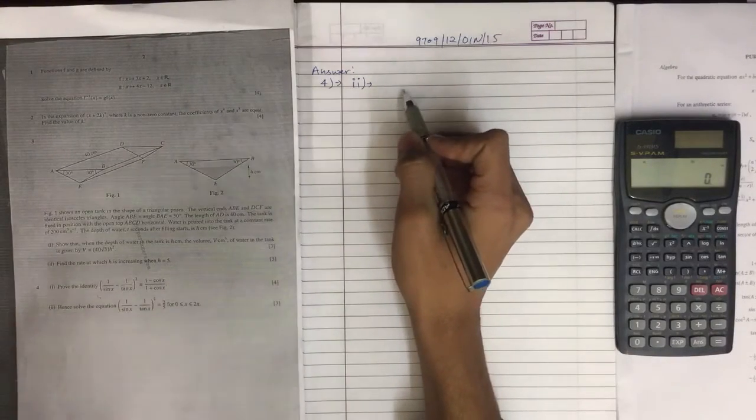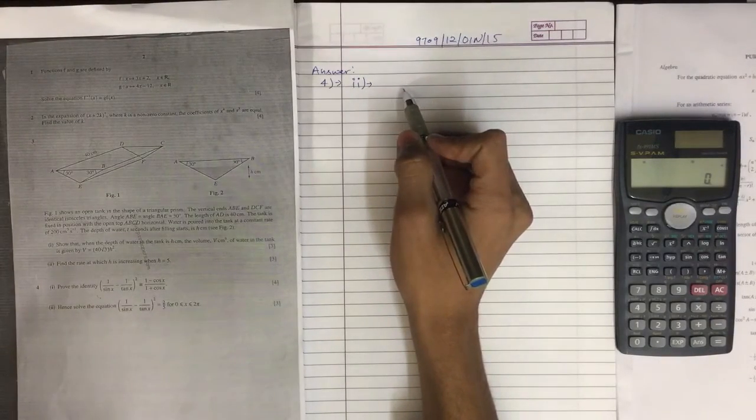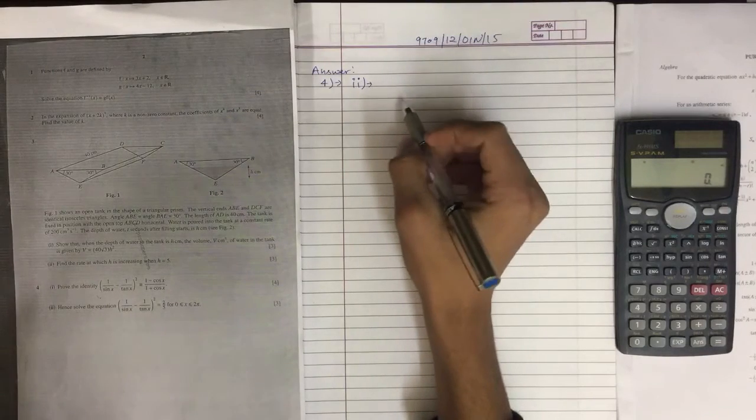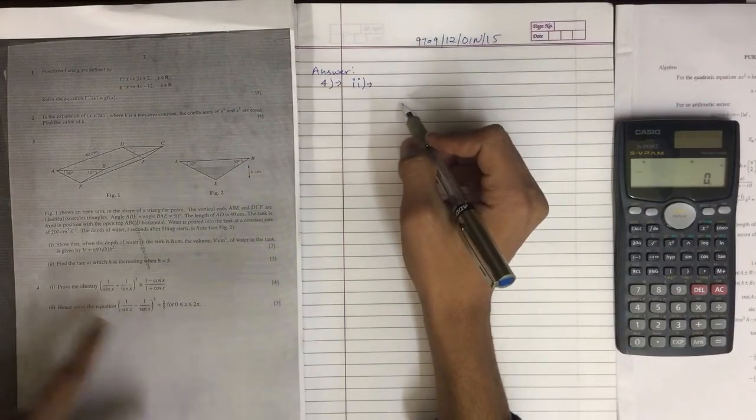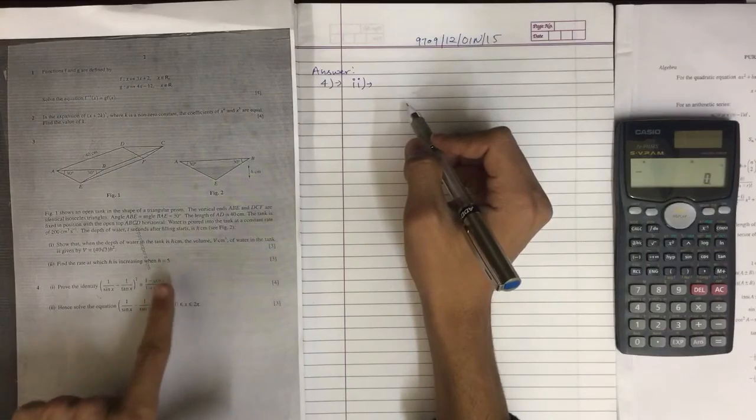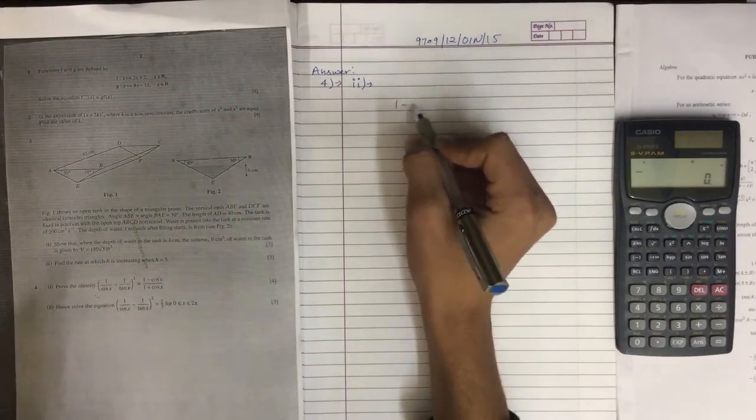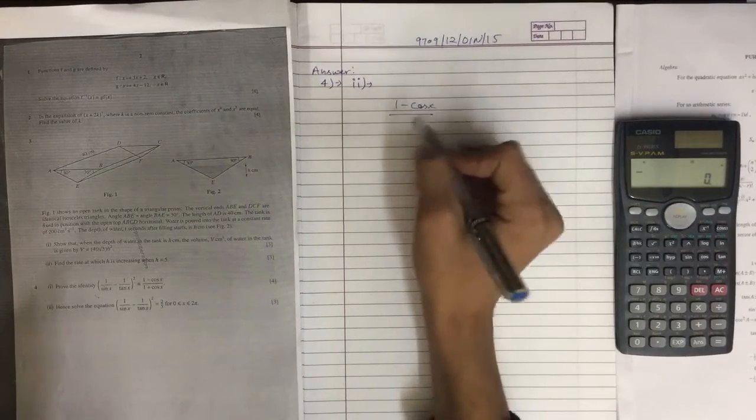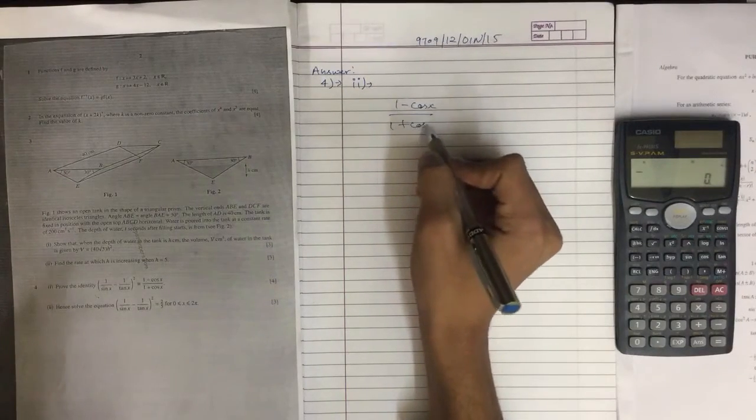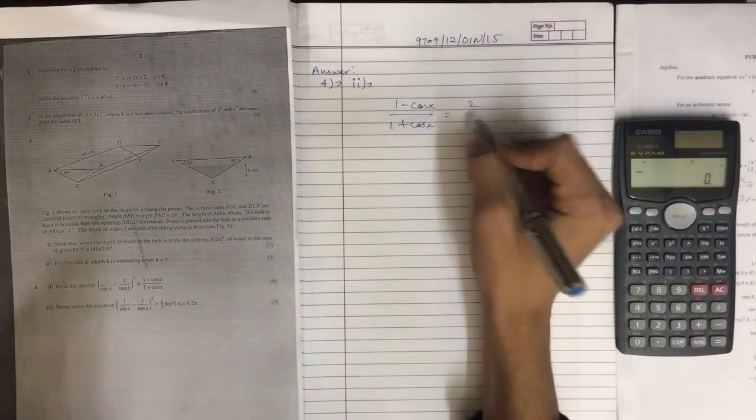To solve this we will use the result from our previous question. We are going to equate that result to this, and we get (1 minus cos x) over (1 plus cos x) equals 2 over 5.